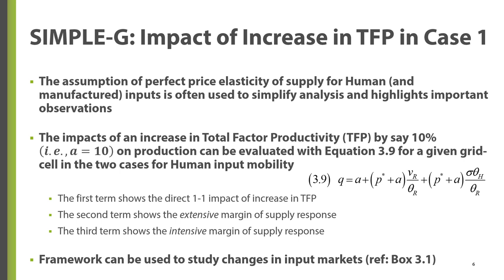Using this equation, we can decompose the change in output into three economically intuitive components. The first term shows the direct one-to-one impact of improved productivity. The second term shows the extensive margin response to the increase in productivity, which depends on the price elasticity of resource supply and the cost share of resources in the specific grid cell. The third term shows the intensive margin response to the change in productivity. The magnitude of both the extensive and intensive margin responses are driven by aggregate-level price and productivity change, but depend on the biophysical characteristics of the grid cell.